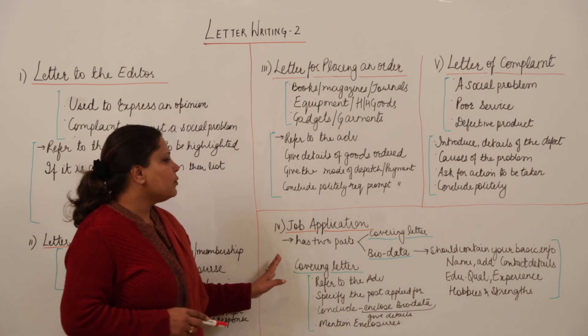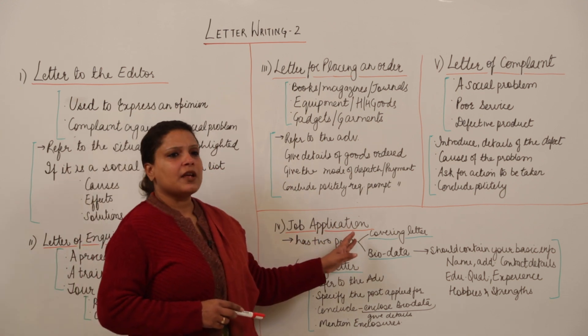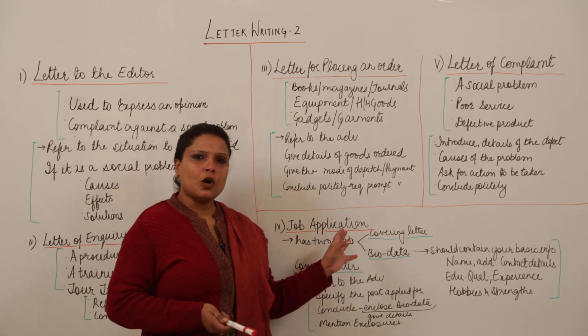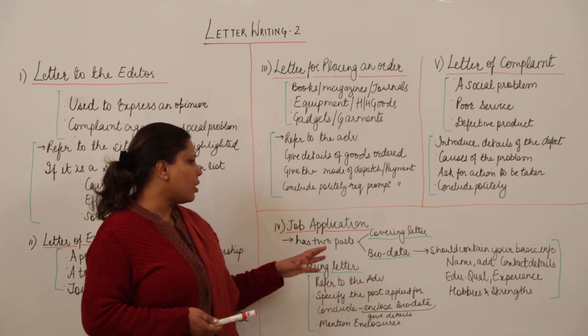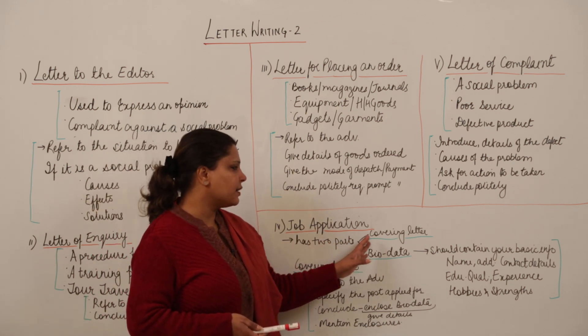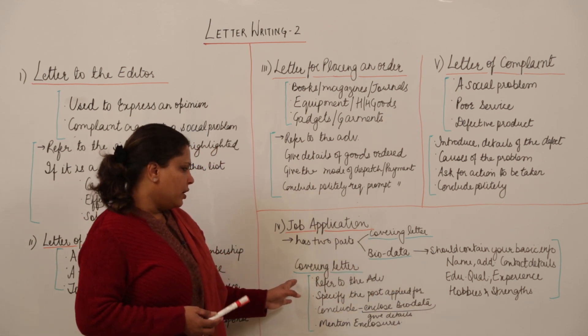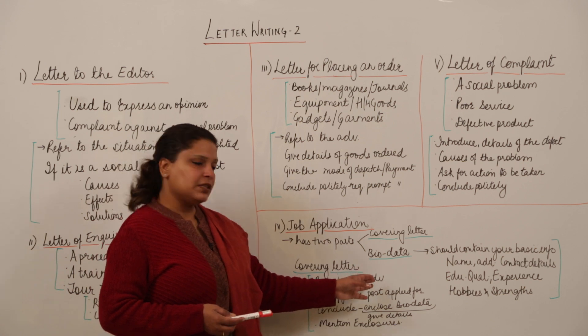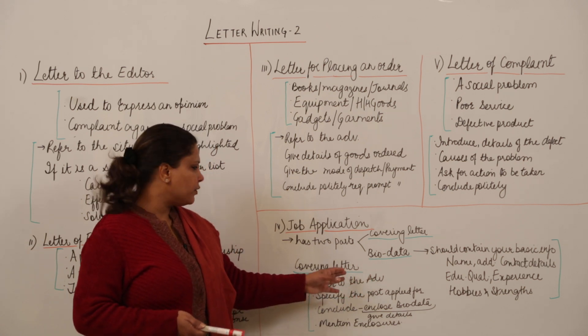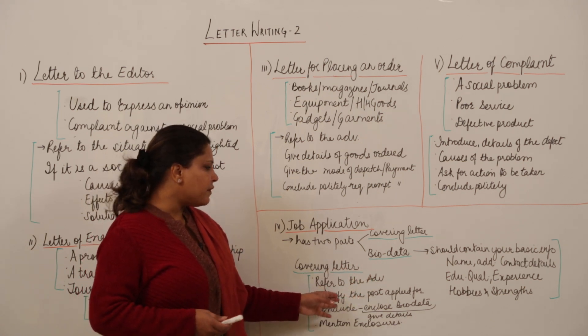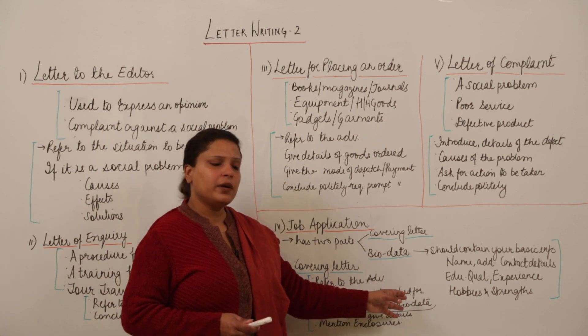The fourth type of letter and the most important is job application. You are applying for a job and it should have two parts: the covering letter and the bio data. The covering letter should include your reference to the advertisement where you saw the notice for the job application. Specify the post or the designation that you are applying for.